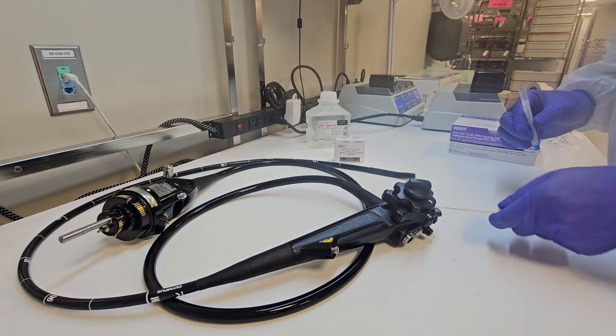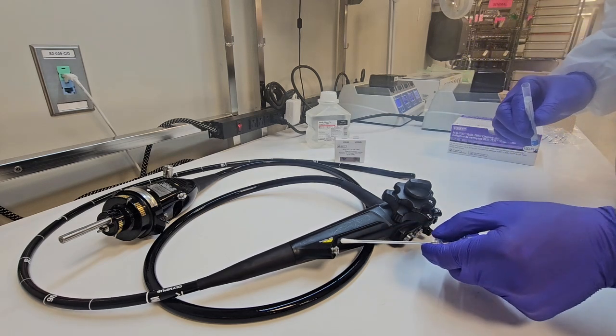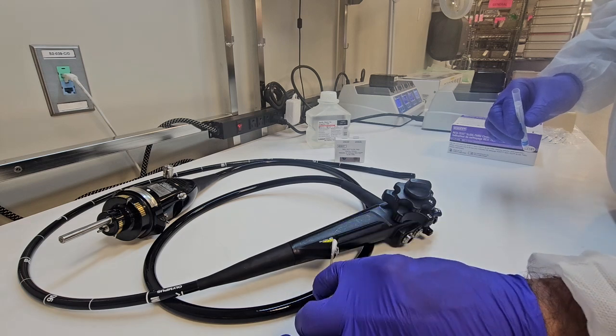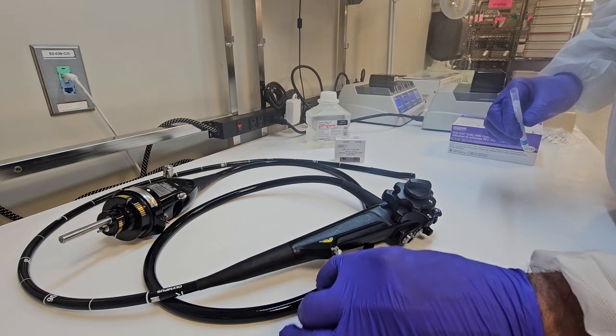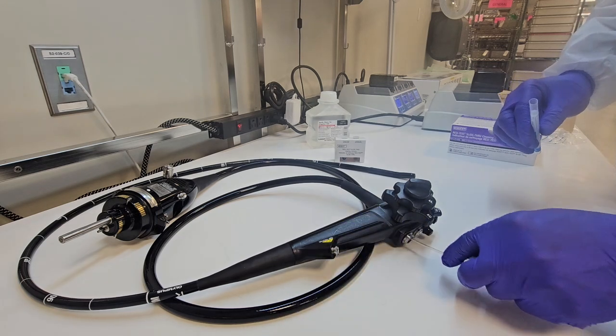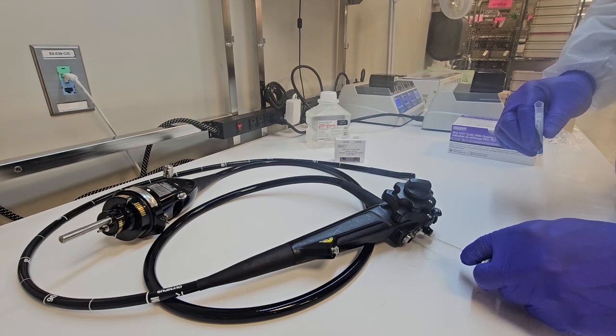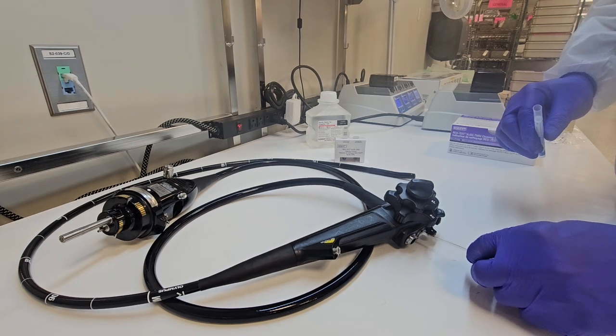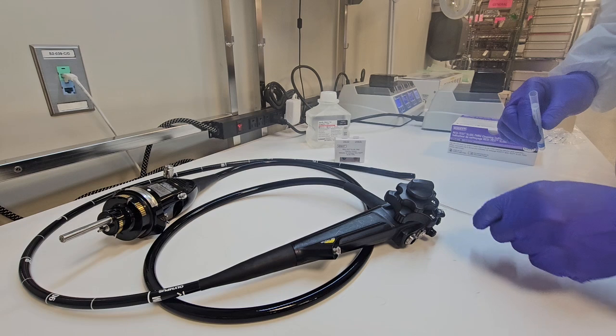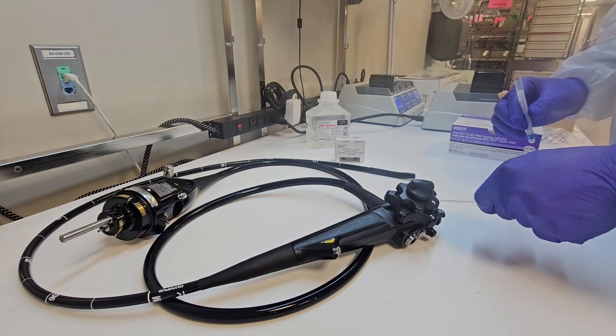And I'm going to swab in areas that I feel are the most challenging, which is around the control body and those knobs. As stated, we use non-linting wipes, towels and/or sponges. So do we truly get in between those knobs really good? And if we're using a brush to brush those areas, are the bristles long enough to get in between those knobs?